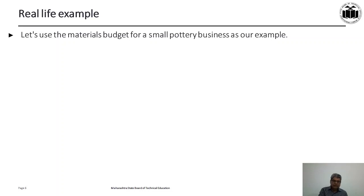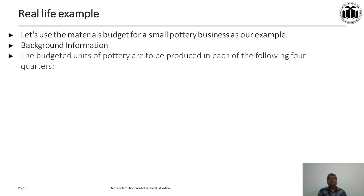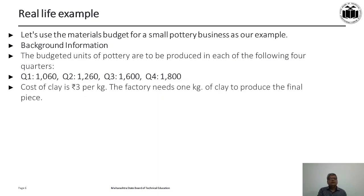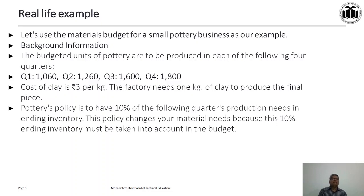Let's use the material budget for a small pottery business as our example. The budgeted units to be produced each quarter are: Quarter 1 — 1,060; Quarter 2 — 1,260; Quarter 3 — 1,600; Quarter 4 — 1,800. The cost of clay is Rs. 3 per kg, and the factory needs 1 kg of clay to produce one final piece. So if you want to produce 1,060 units, you will need 1,060 kg of material.